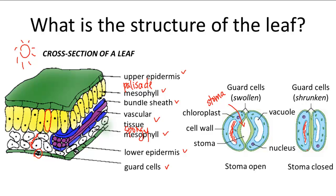The upper and lower epidermis protect the rest of the cells, and there's also an additional layer called the cuticle made of cutin, a waxy substance that helps minimize water loss through transpiration. It's basically a laminated layer above and below the upper and lower epidermis.